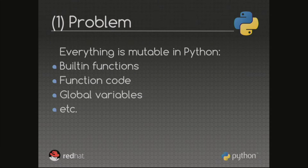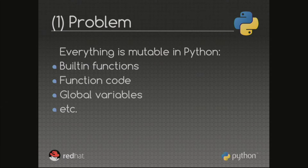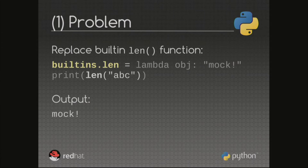The first blocker is that everything in Python is mutable. Built-in functions like len can be replaced at runtime. You can even modify the bytecode of a function at runtime. There is no such thing as a constant in Python — you cannot rely on the value of a global variable because it can change any time. For example, you can replace the len function at runtime, and when you call it, instead of getting the length of a string, you get a mock. This is very common in unit testing — using the mock module to reduce complexity and test one specific function.